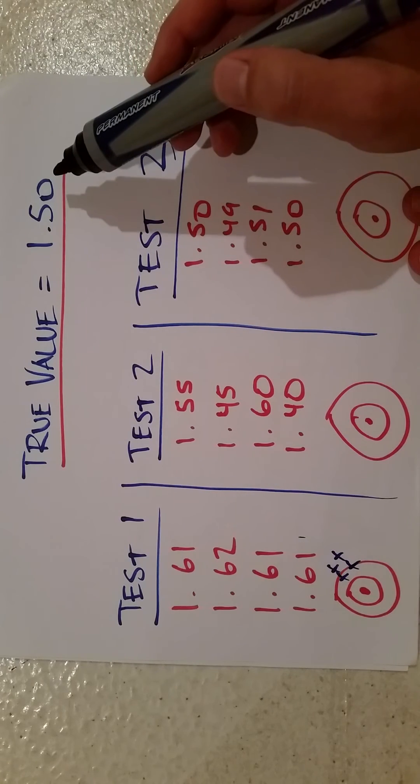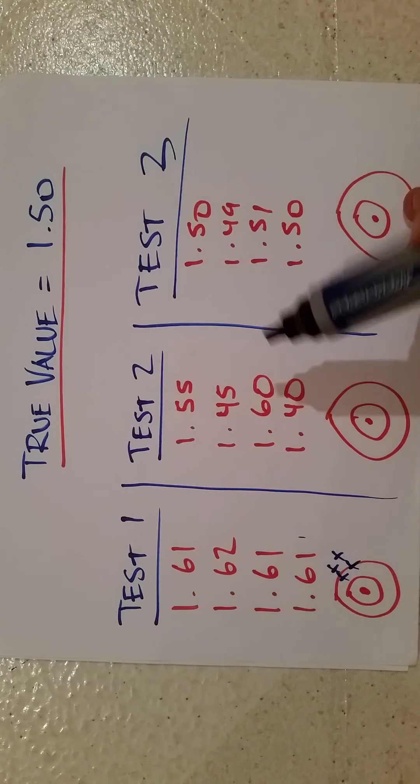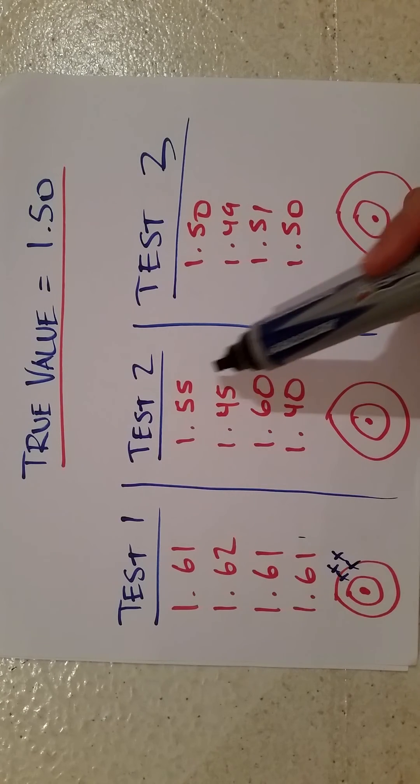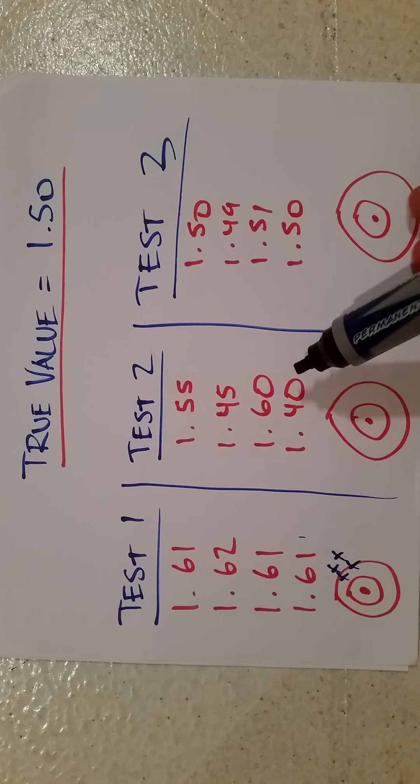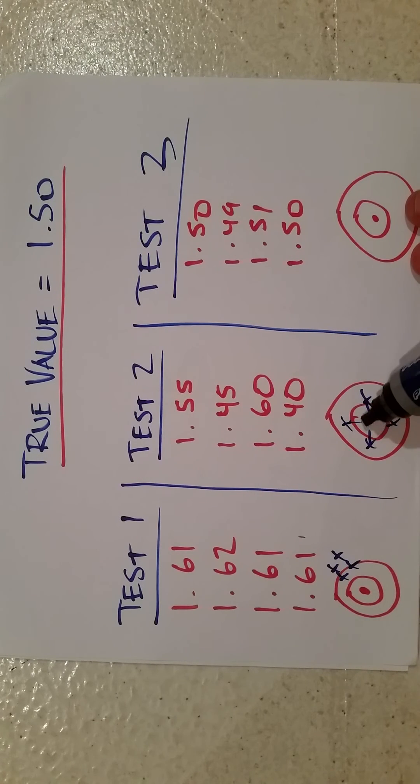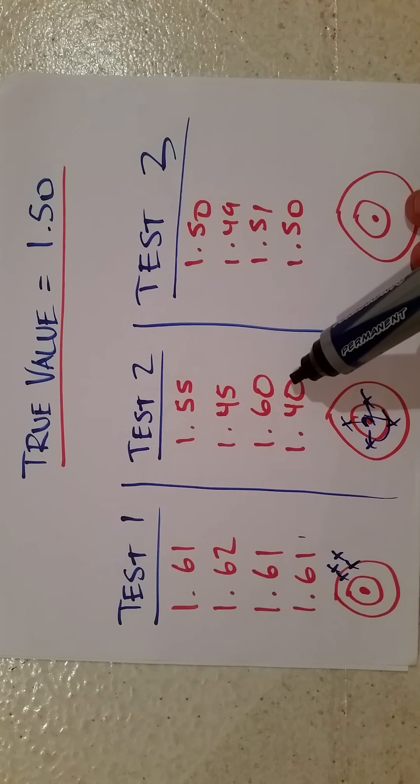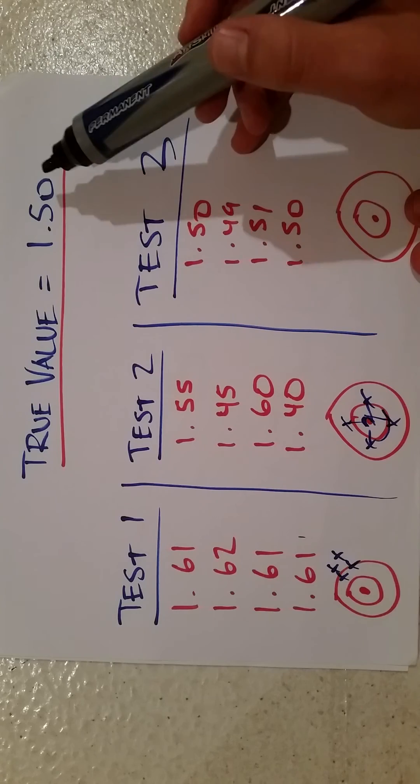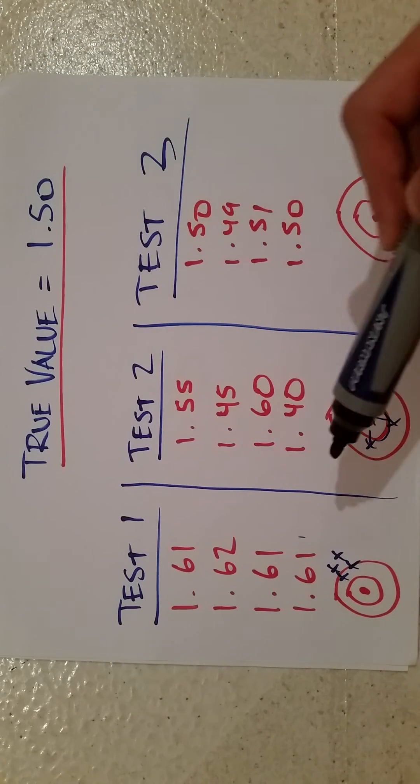Let's look at test two: 1.55, 1.45, 1.60, 1.40. These are more accurate than these, right? If you look at their average, they're all pretty much right around the middle of that bullseye. But they're not precise. See how spaced out they are? They're not very close together, but if you average them all out, you get the correct true value. So they are accurate but not precise.